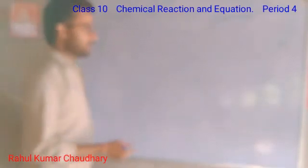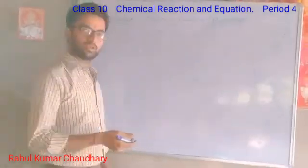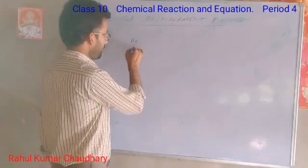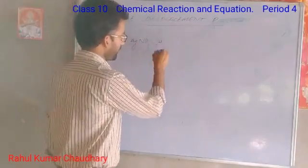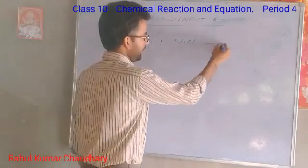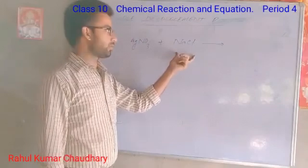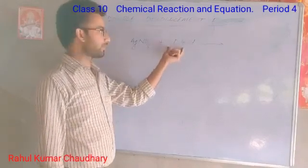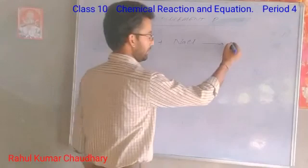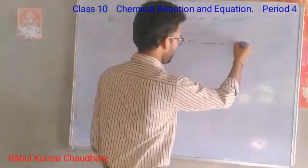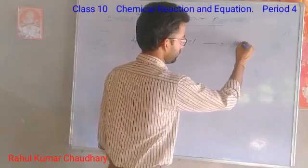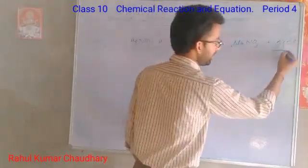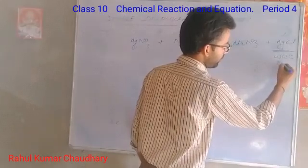Let us consider some examples for double displacement reaction. When silver nitrate (AgNO3) reacts with sodium chloride (NaCl), the silver and sodium elements displace each other and produce sodium nitrate (NaNO3) plus silver chloride (AgCl). The AgCl is observed as a white precipitate.